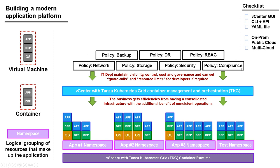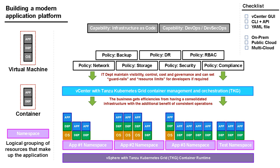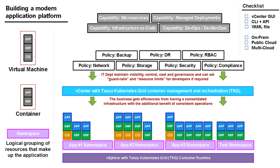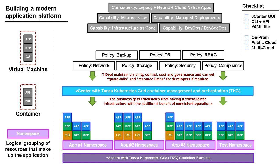All this policy work gives you guardrails and resource limits for developers when required, ensuring everything is in hand while allowing developers and programmers to access and work with the platform — with visibility, control, cost management, and governance maintained. Once those policies are in place, we can give developers capabilities like infrastructure as code, the ability to create VMs, containers, or infrastructure from a text file. They can do DevOps or DevSecOps, break applications into microservices, manage deployments in a more modern way, and manage legacy applications, hybrid applications, and cloud-native applications consistently.